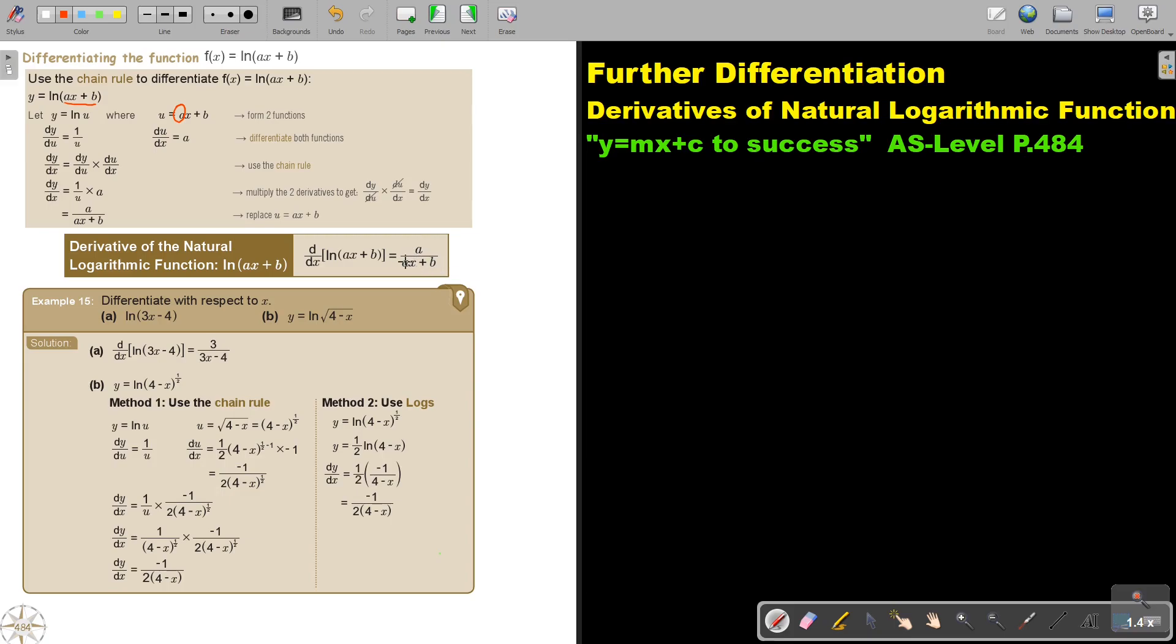But let's first look at a few examples. So if I ask you to differentiate this, so this is equal to 3 over 3x minus 4. So basically I'm just taking the value in front of x and I just rewrite the bracket.